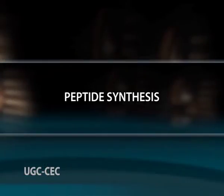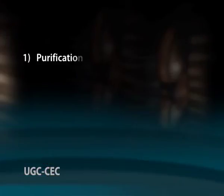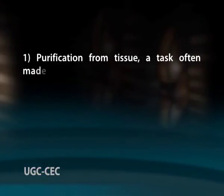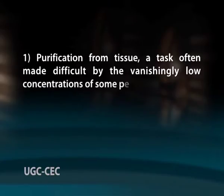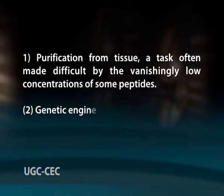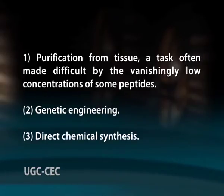Now let us see peptide synthesis in detail. Many peptides are potentially useful as pharmacological agents and their production is of considerable commercial importance. There are three ways to obtain a peptide: one, purification from tissue — a task often made difficult by the vanishingly low concentrations of some peptides; two, genetic engineering; or three, direct chemical synthesis.